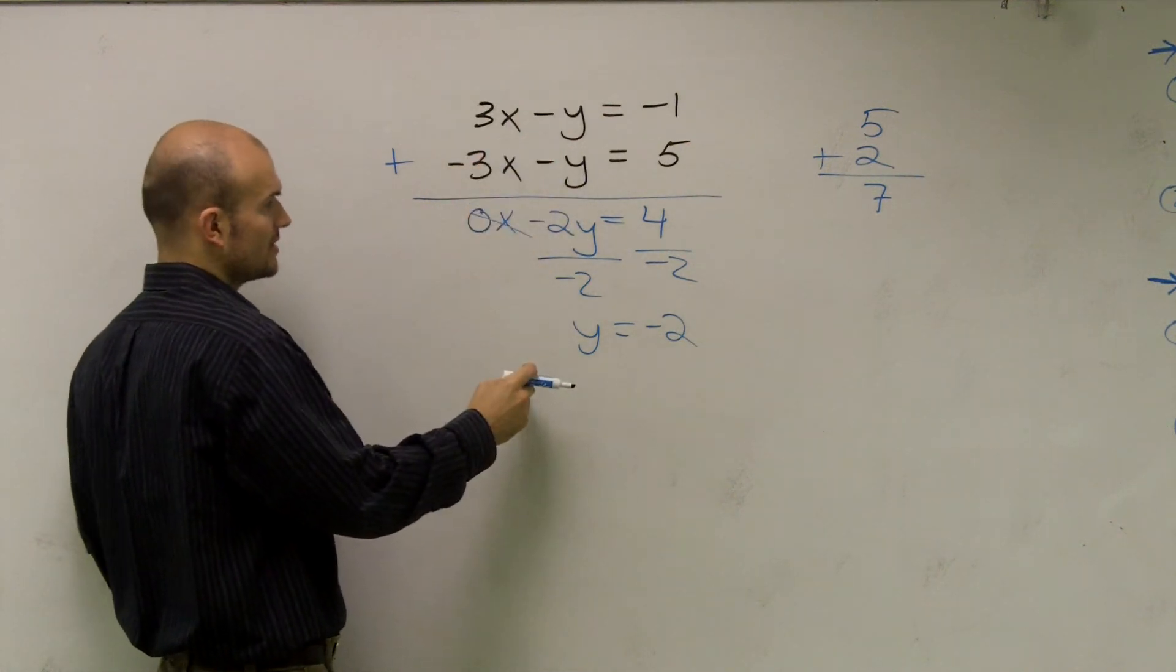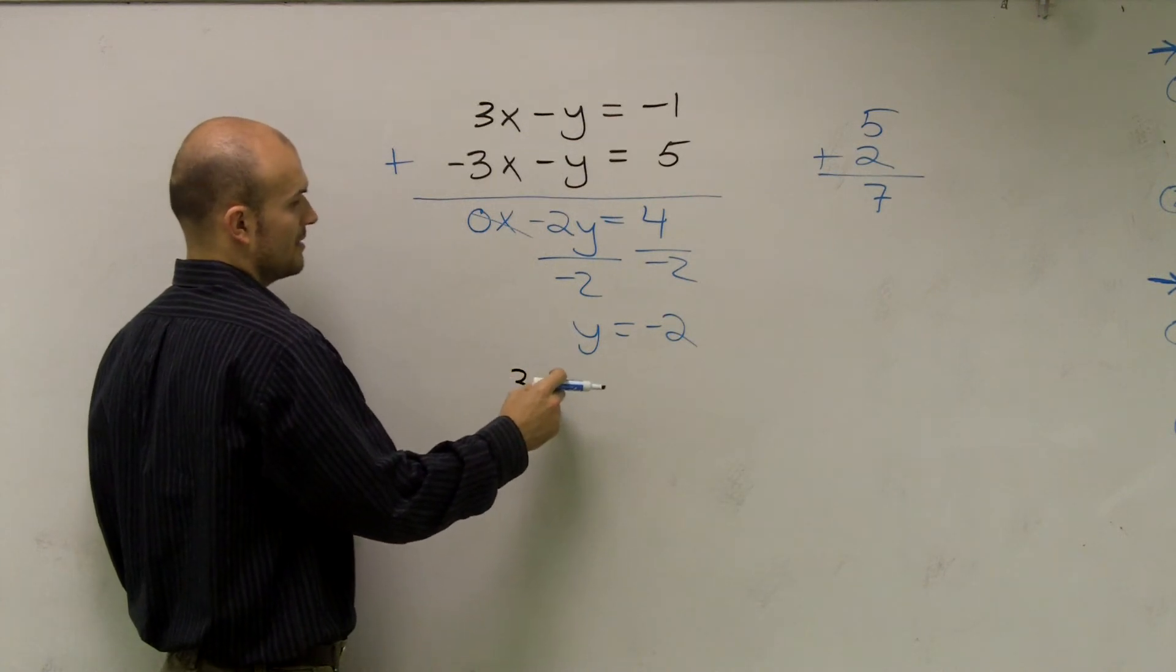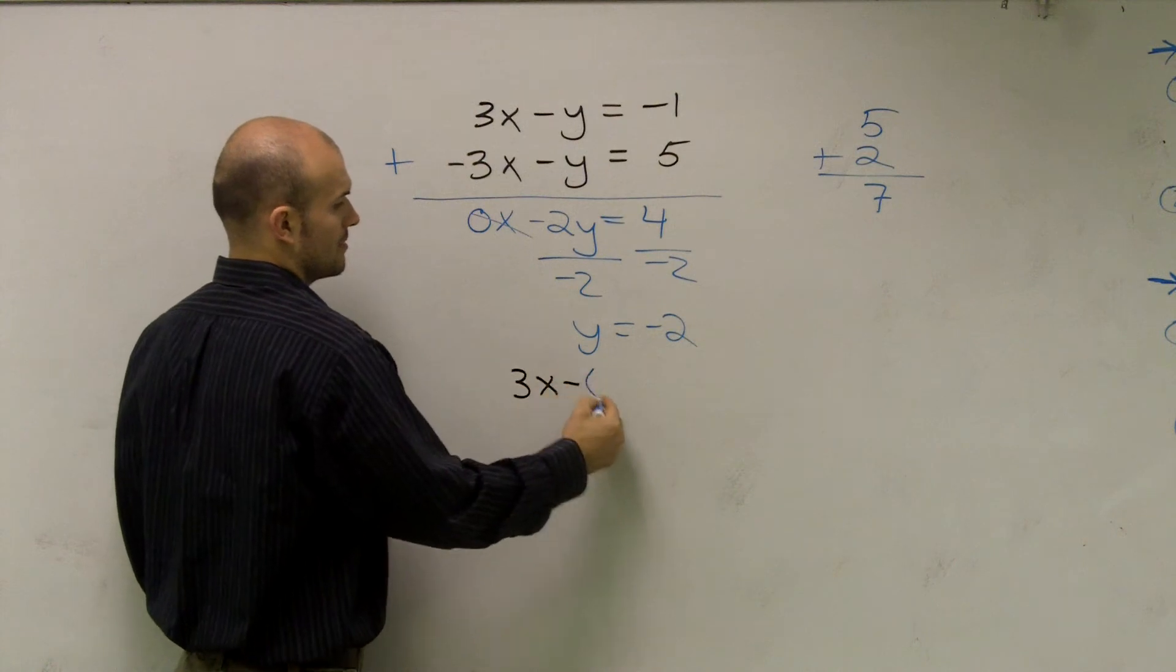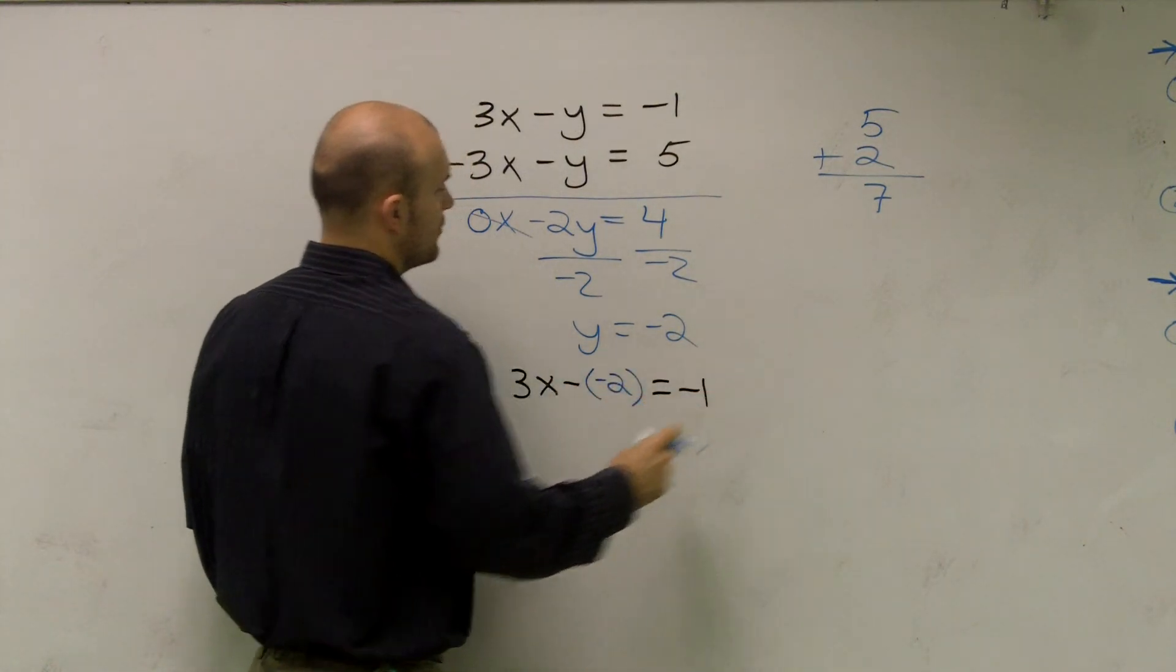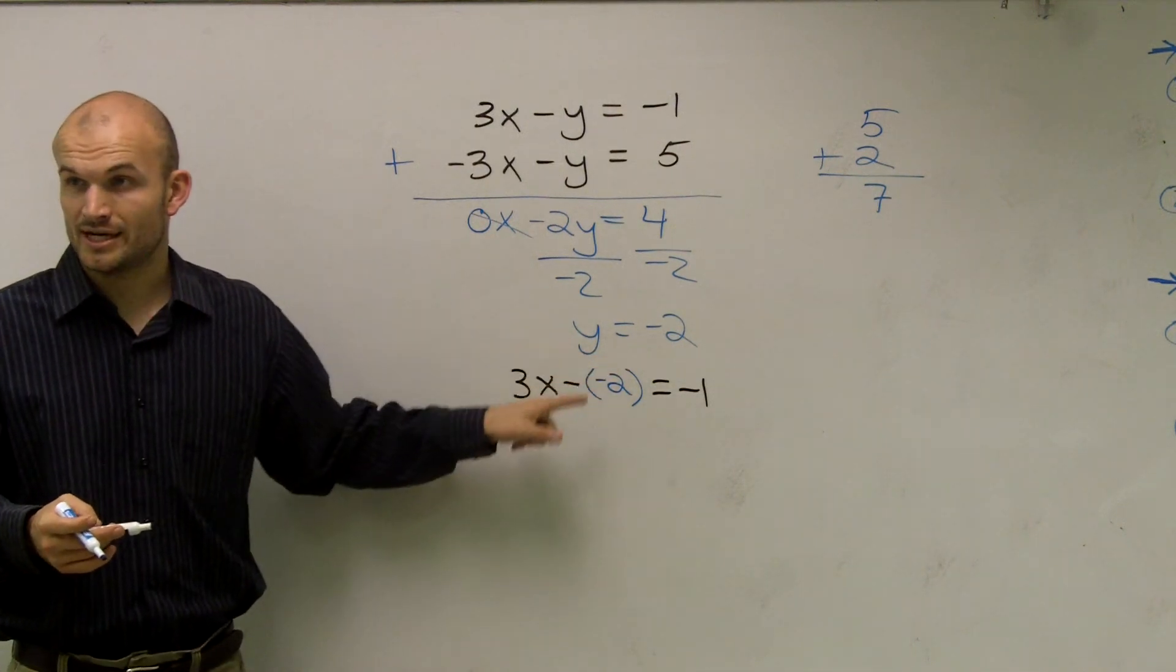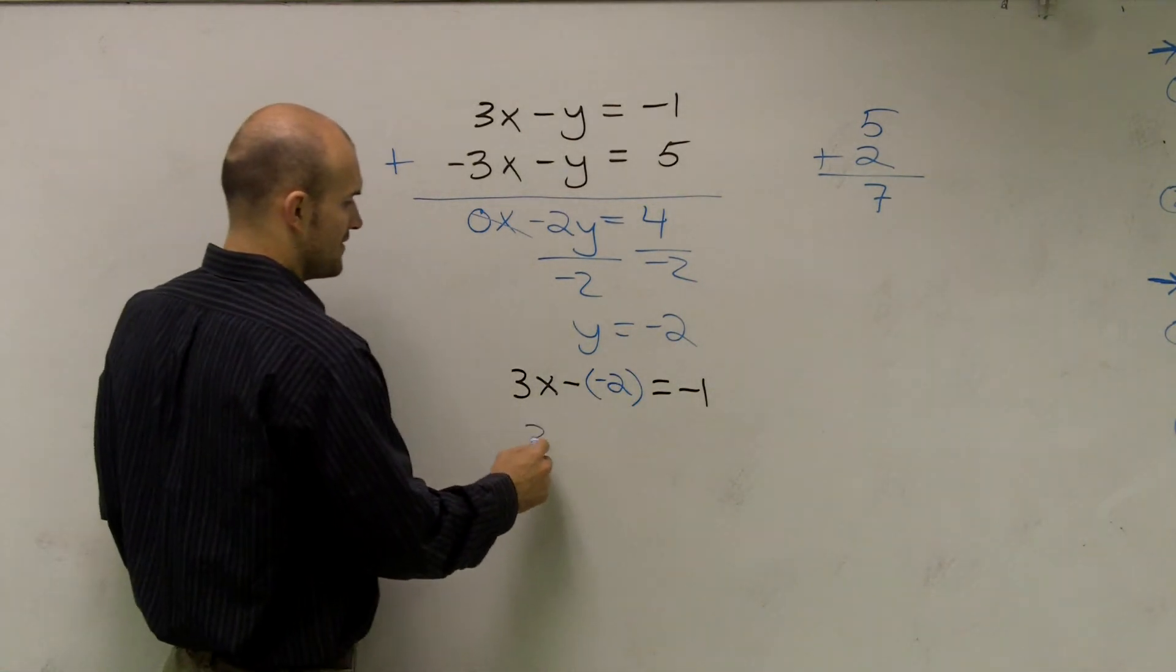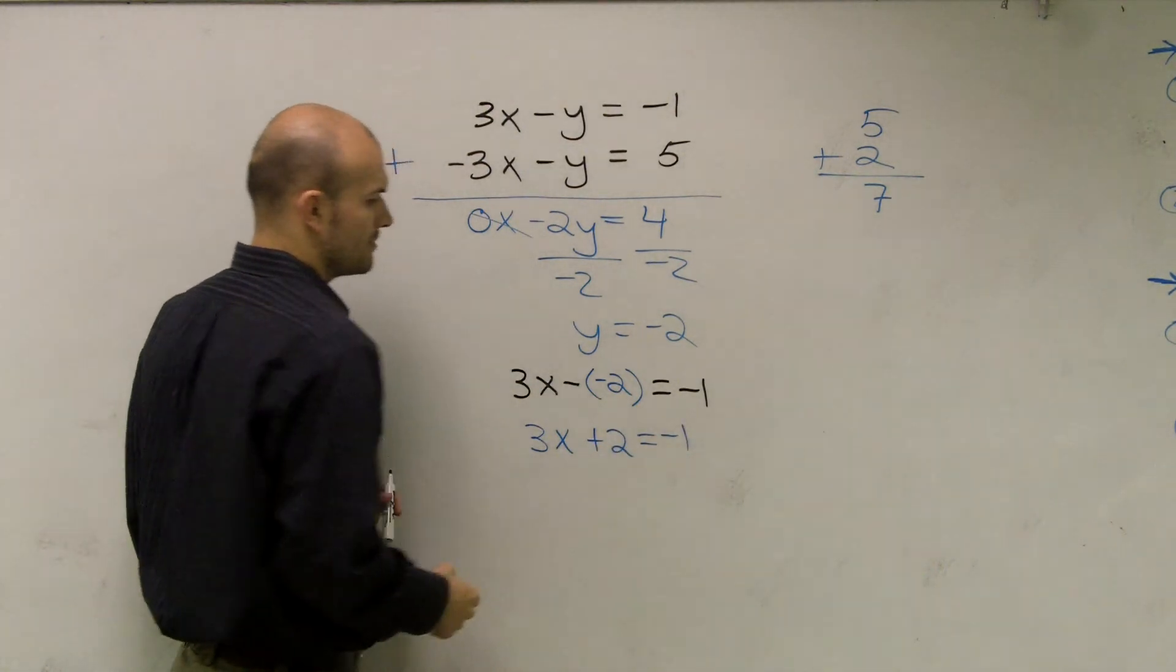So I'll plug it into the top equation, because I don't like dealing with that negative. So I'll have 3x minus a negative 2 equals negative 1. So now, again, I have a double negative. That's going to make it turn to a positive. So I have 3x plus 2 equals negative 1.